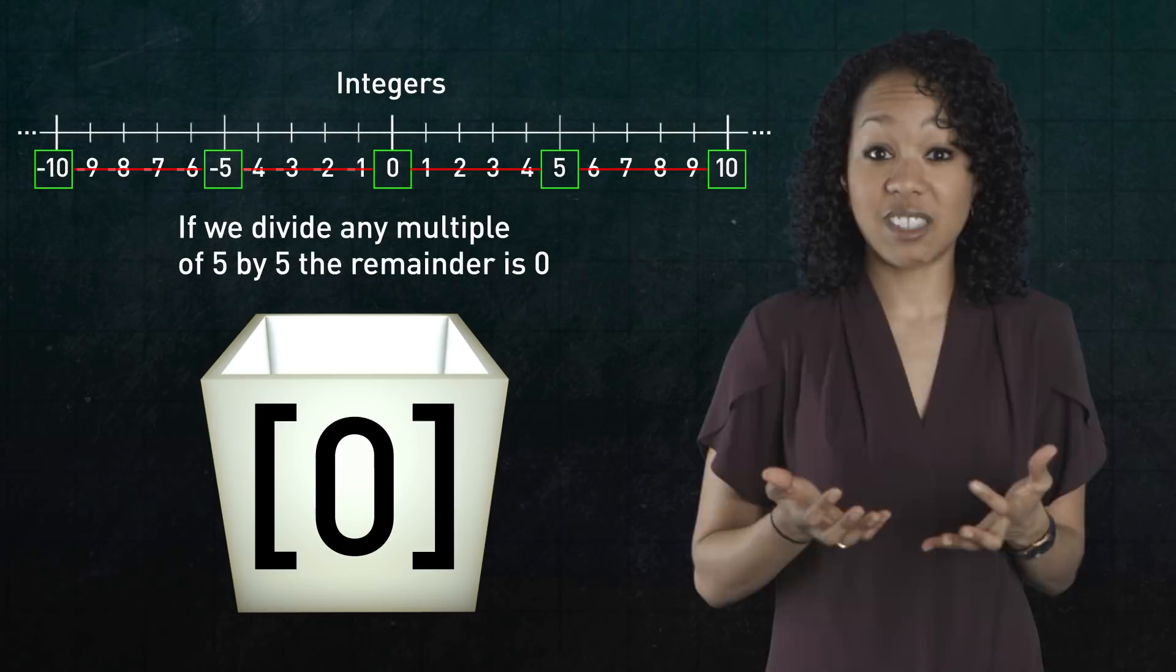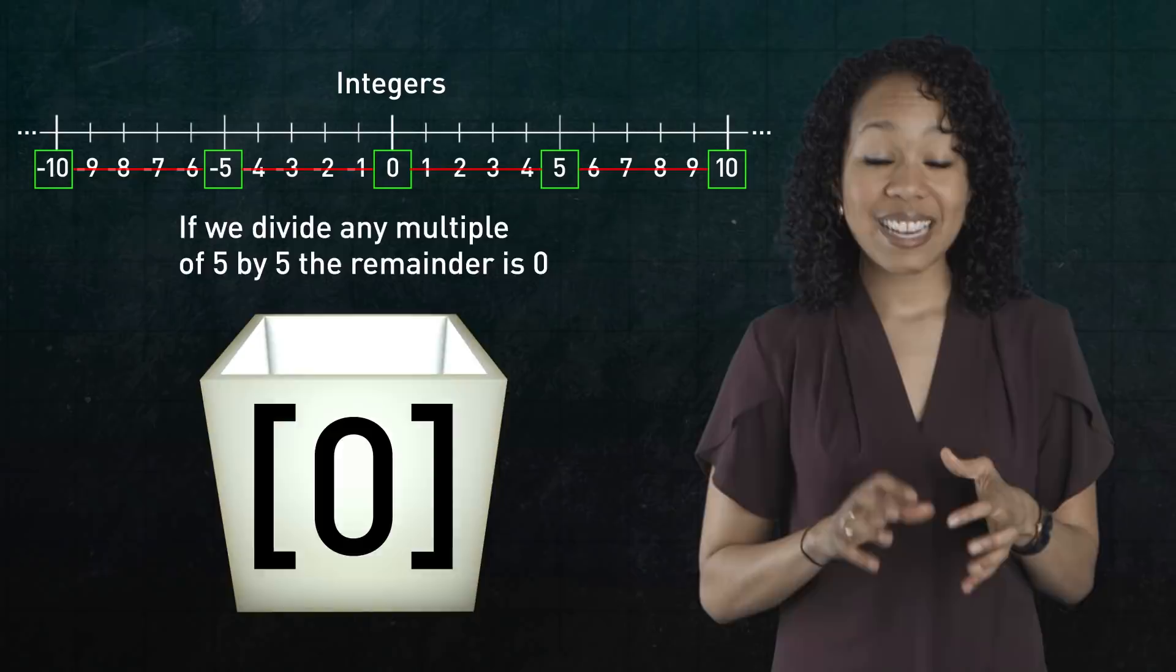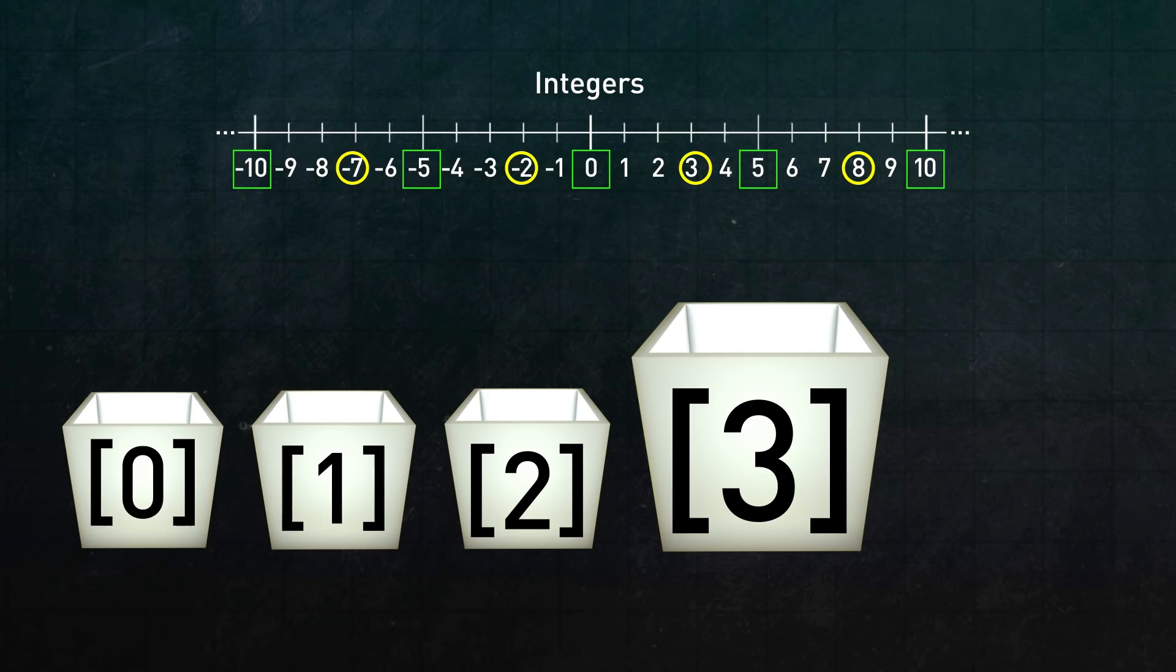Notice I'm using square brackets just to differentiate the box from the actual number 0. Similarly, we can put the integers that are not multiples of 5 because they have a remainder of 1 in their own box. Let's label it 1. Likewise, integers that are off by 2 go in their own box, 2. Integers that are off by 3 go into box 3, and integers that are off by 4 go into 4.